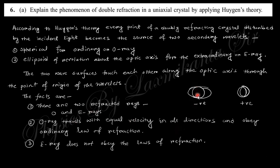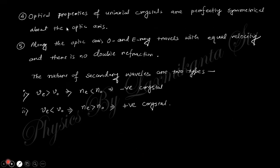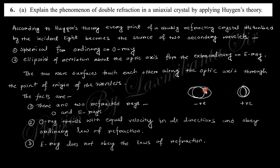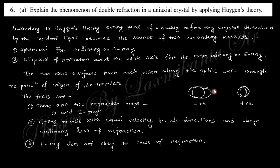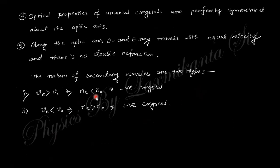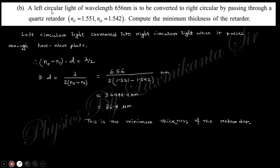Using Huygens' principle, the ordinary ray produces a spherical wavefront obeying Snell's law, while the extraordinary ray produces an ellipsoidal wavefront that does not obey Snell's law. The ordinary ray has equal velocity in all directions (spherical), while the extraordinary ray does not obey the refraction law. Optical properties of a uniaxial crystal are perfectly symmetrical about the optic axis. If the velocity of the extraordinary ray is greater than the ordinary ray, the refractive index is inverse — this is a negative crystal; the reverse is a positive crystal.